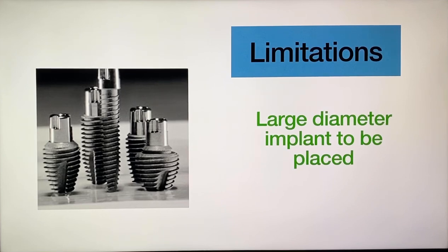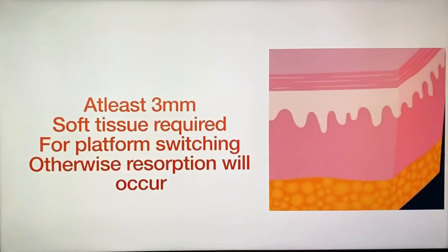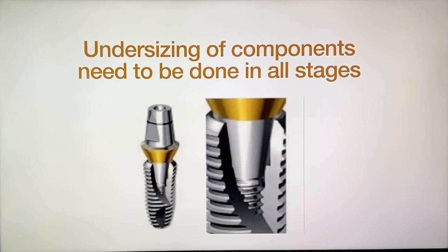In this way we can protect the bone by platform switching. But platform switching comes with some limitations. We always require a larger diameter implant. A smaller size abutment may compromise the emergence profile. We require at least 3 mm of soft tissue, otherwise resorption will occur. And lastly, undersizing of the components needs to be done at all stages — if we are going for a small abutment we need to go for a small prosthesis. We need to consider all these limitations while planning for platform switching.